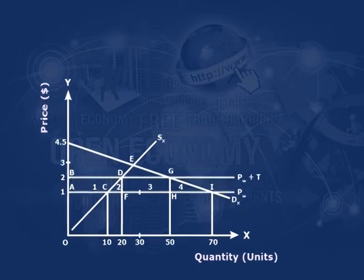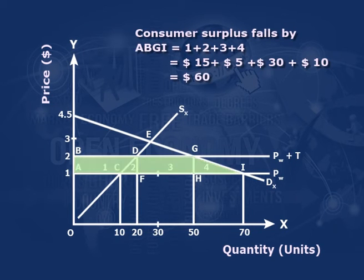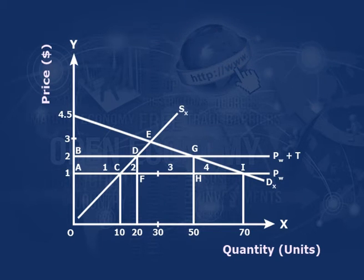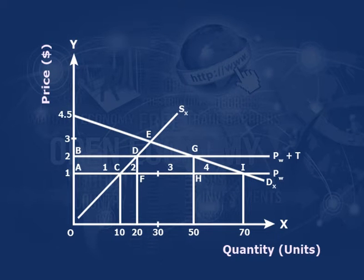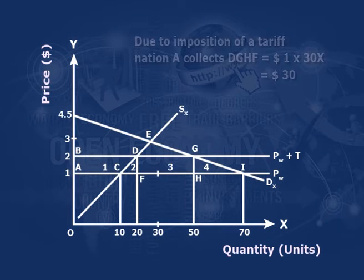An imposition of a tariff increases the domestic price of the commodity and hence the consumer surplus falls by areas A, B, G, I — that is area 1 plus 2 plus 3 plus 4, equal to $15 plus $5 plus $30 plus $10, that is $60. Similarly, an imposition of tariff increases producer surplus by area A, B, D, C — that is area 1, which is $15. Due to imposition of a tariff, nation A collects areas D, G, H, F — that is $1 into 30X, which is $30.